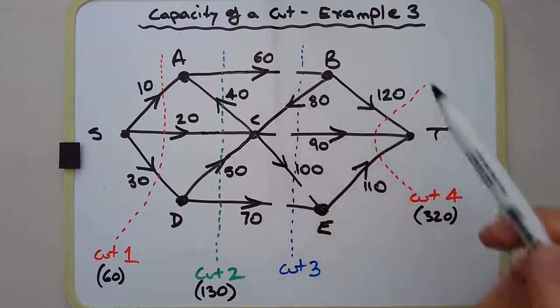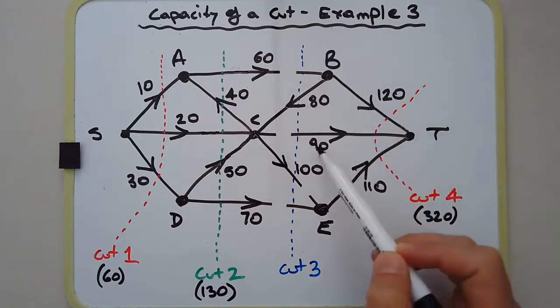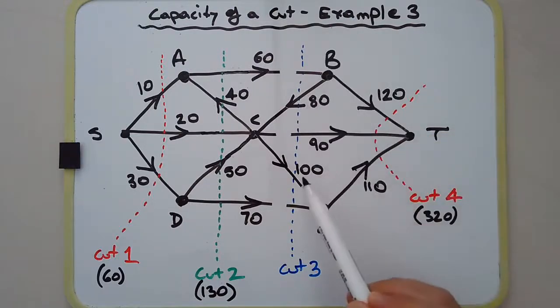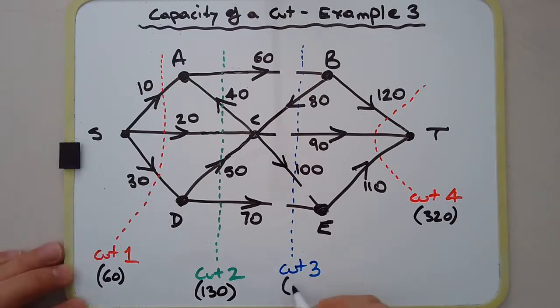Plus—we missed the 80—plus 90, plus 100, plus 70. So there's actually four edges that have been cut that need to be included, and that gives us 320.